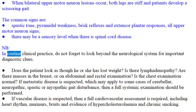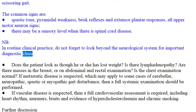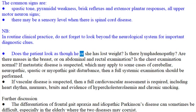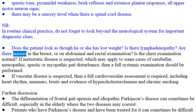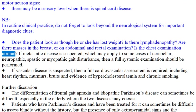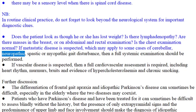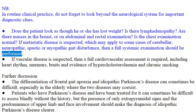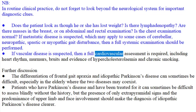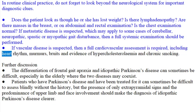In routine clinical practice, do not forget to look beyond the neurological system for important diagnostic clues. Does the patient look as though he or she has lost weight? Is there lymphadenopathy? Are there masses in the breast, or on abdominal and rectal examination? Is the chest examination normal? If metastatic disease is suspected, which may apply to some cases of cerebellar, neuropathic, spastic or myopathic gait disturbance, then a full systemic examination should be performed. If vascular disease is suspected, then a full cardiovascular assessment is required, including heart rhythm, murmurs, bruits and evidence of hypercholesterolemia and chronic smoking.